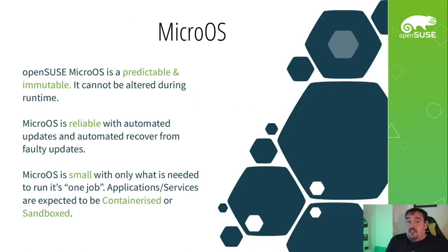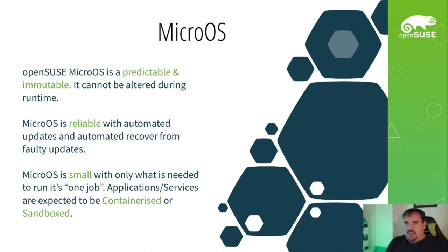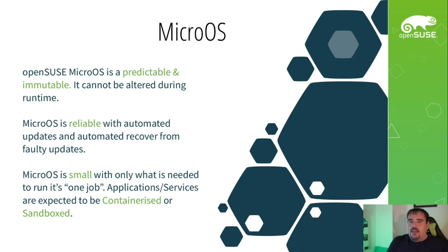This is really where MicroOS comes in — an OpenSUSE variant really designed to address this whole collection of issues, requirements, and this new philosophy of single-purpose systems. It's predictable: every single time you're installing MicroOS, it's going to behave the same way, updated in a very predictable and immutable fashion. Once it's deployed, it's not going to change without you actively changing it. And if you do make that change, it'll be done in a predictable and rollbackable way. Updates will be reliable, with automatic updates and automatic recovery and rollback of any failed updates. We keep MicroOS as small as it can be to do that one job it needs to do — generally a very minimal OS with some kind of container runtime, and then all applications and services running containerized or sandboxed.